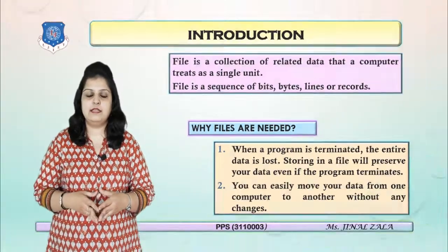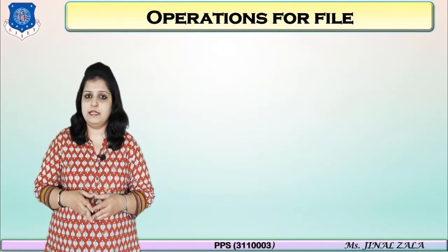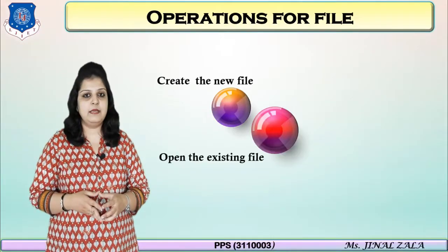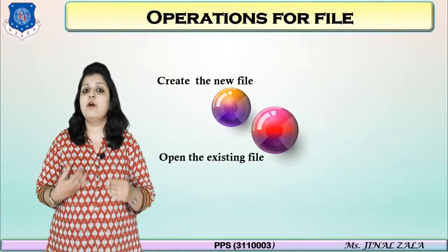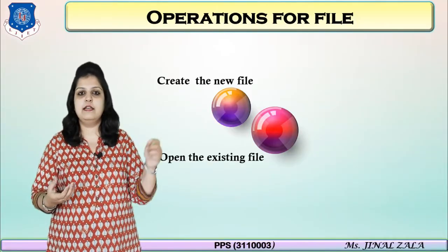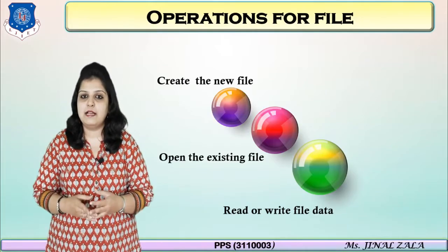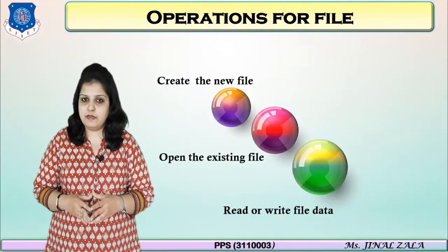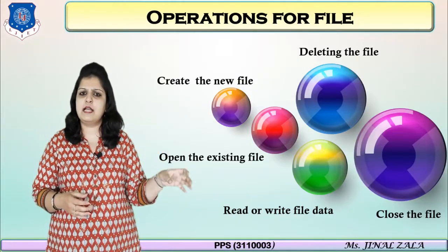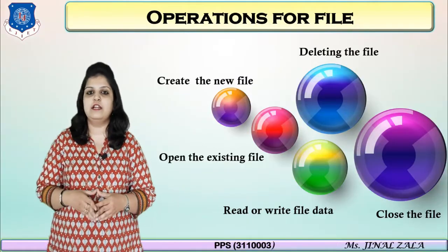Now let's see the different operations which we can perform on a file. The very first operation is creating a new file. The next operation is opening an existing file — if a file has already been created and you want to open it, that is possible using a particular function. Then, if some data is already written in a file, we can read or write data from that file. If a file is no longer required, you can also delete it. And the last operation is closing the file once your task is completed.